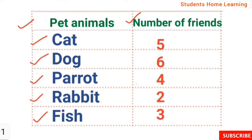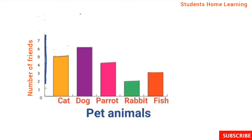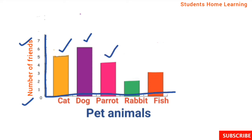Draw a bar graph for this data. Draw the axes. Numbers range from 2, so plot from 0 to 7. Cat: bar up to 5. Dog: bar up to 6. Parrot: bar up to 4. Rabbit: bar up to 2. Fish: bar up to 3.